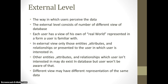Each user has a view of their own real world represented in a form the user is familiar with. In an external view, only those entities, attributes, and relationships that the user is interested in are presented. For example, on Facebook you have liked certain features such as pages and groups, and only those things will be presented to you which you are interested in. This does not mean that other things do not exist in the database — they do exist, but they are not presented to you and you are not aware of them.